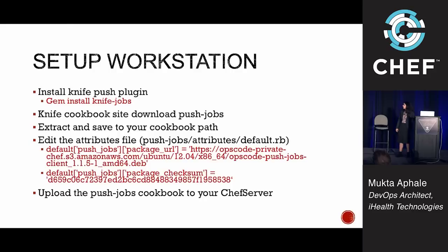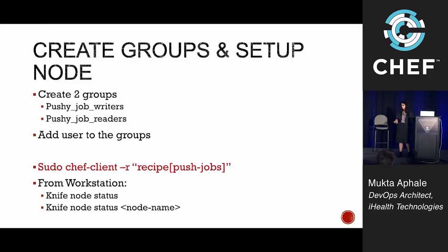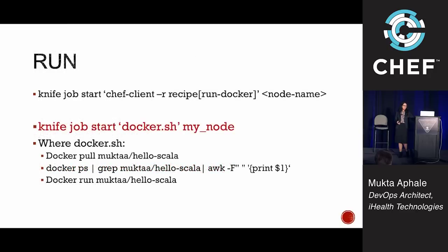You run Chef client on your node, and then from your workstation you can check the node status by running 'knife node status'. You'll see something like 'available', which means you can run push jobs on that node. There was quite some setup required to make a node push-jobs-capable. During this, we faced a couple of issues, but if you do it properly it works. To actually start the job, you run the command 'knife job start docker_ssh'. The docker_ssh script does a Docker pull, stops the existing container, and runs the latest image.